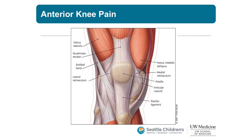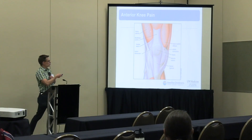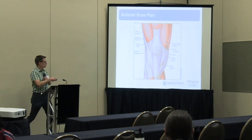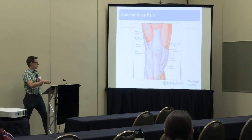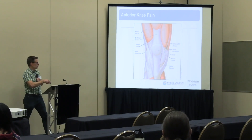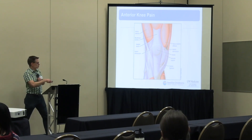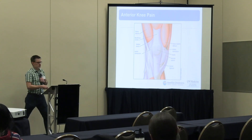Here's a quick anatomy review. There's the patella and the patellar tendon. Hoffa's fat pad would be directly on either side of the tendon. The quad tendon can sometimes be bothered. The tibial tubercle is right here. Those are the most common sites you'll see in kids.